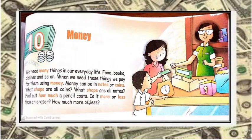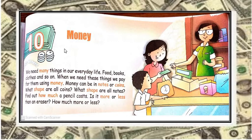Money, Chapter Number 10. We need many things in our everyday life. Food, books, clothes and so on. When we need these things, we pay for them using money.